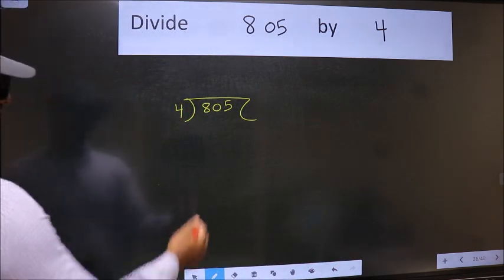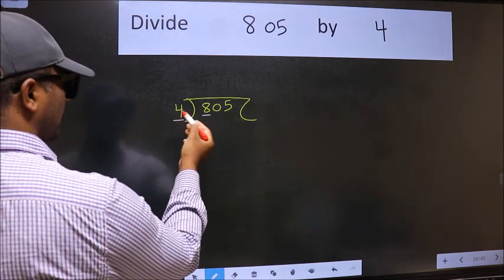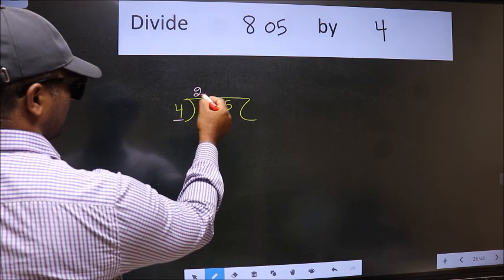Next. Here we have 8 and here 4. When do we get 8 in the 4 table? 4 twos, 8.